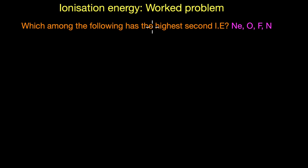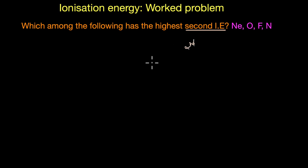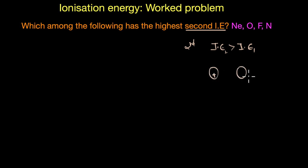The last problem asks which among neon, oxygen, fluorine, and nitrogen has the highest second ionization enthalpy. Second ionization enthalpy is the energy required to remove a second electron from an atom after one has already been removed. It is always greater than the first ionization enthalpy because it is much more difficult to remove an electron from a positively charged species — in a positive ion, more protons attract the outermost electrons much more strongly than in a neutral atom.